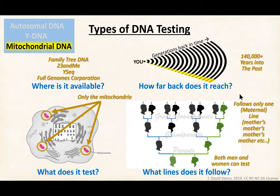Mitochondrial DNA is offered by a smaller set of companies, but the major ones all provide it. It goes as far back as you want on the maternal line — the female ancestor of all people alive today is thought to have lived around 140,000 years in the past. Both men and women can take it, and it follows the maternal line: your mother's, mother's, mother's, and so on. It tests DNA in the mitochondria, which is separate from the nucleus.